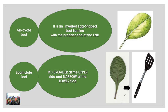Here is an example of an inverted shape. In this case the broader end is at the upper side. In the previous case the leaf was broader at the base and narrow at the tip, but in this case the leaf is broader at the upper side and looks like an inverted egg — so it is called an obovate leaf.